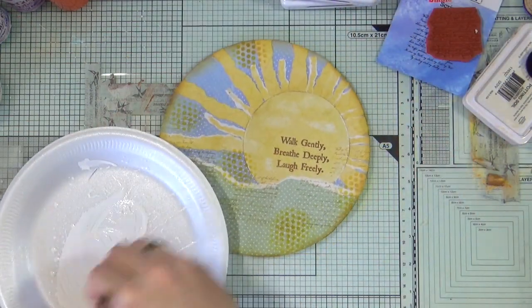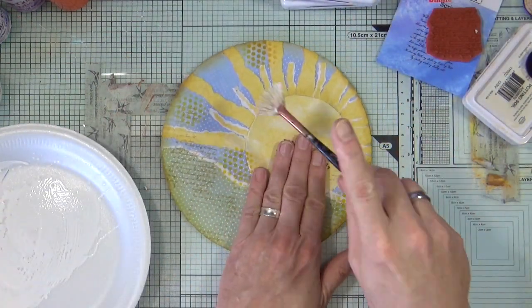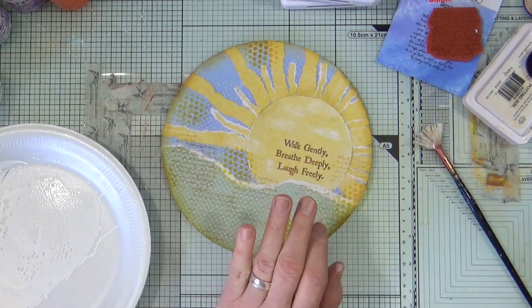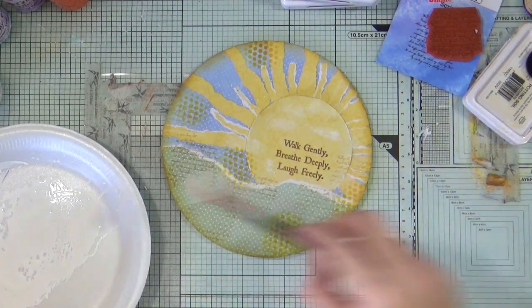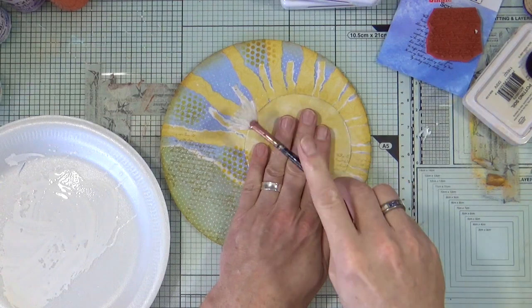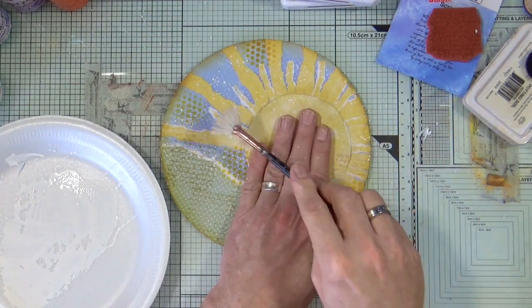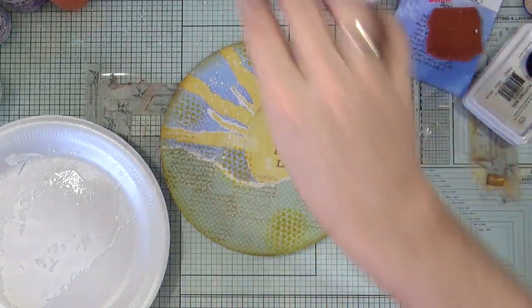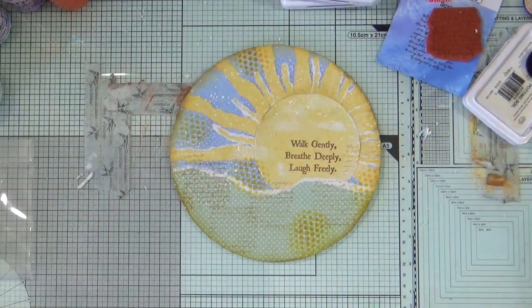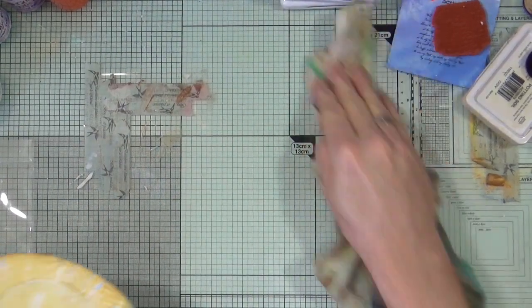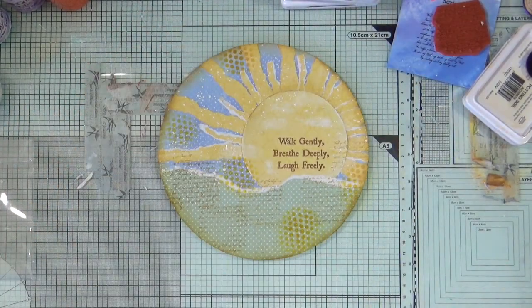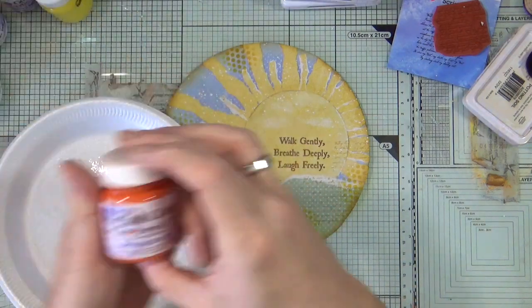Next up I want to add some of my faithful splatters. For that I'm just using the remnants of the white gesso that I used earlier and the fan brush, and I'm just going to add some white sprinkles and white splatters around the top portion of the page.